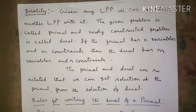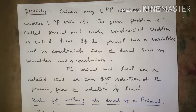Given any LPP, we can associate another LPP with it. The given problem is called the primal LPP, and the newly constructed problem is called the dual LPP. From the given LPP we can associate another LPP called the dual LPP; the given LPP will become the primal LPP and the newly constructed problem is called the dual LPP.